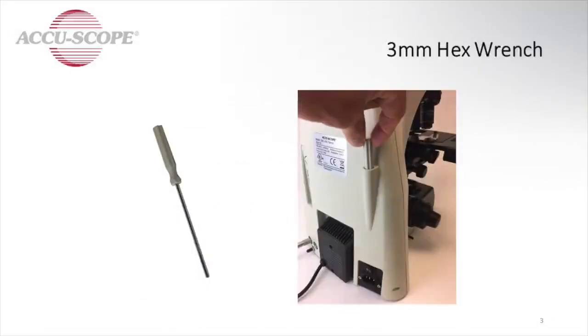Your microscope comes with a 3mm hex wrench, and you will use this several times during installation. For convenience, it's stored in the wrench holder on the back of the microscope frame.